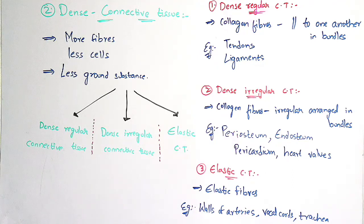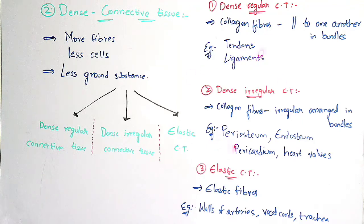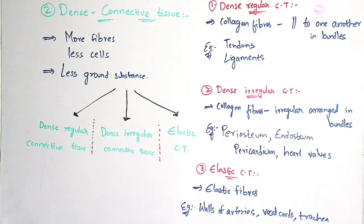Dense regular connective tissue consists of collagen fibers, and those collagen fibers are arranged parallelly to one another, mainly forming a bundle. The best examples for dense regular connective tissue are tendons and ligaments.